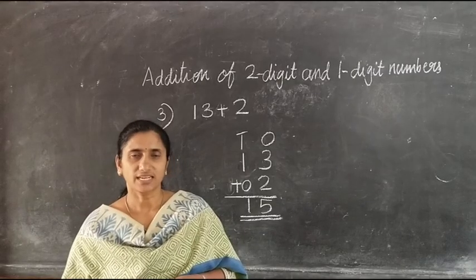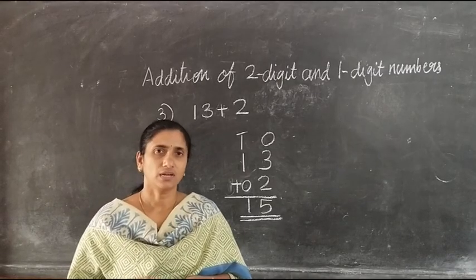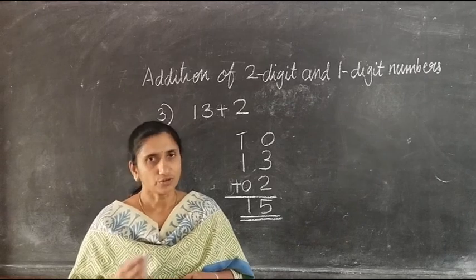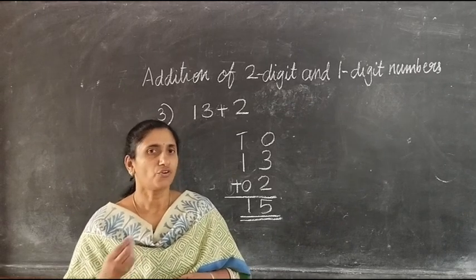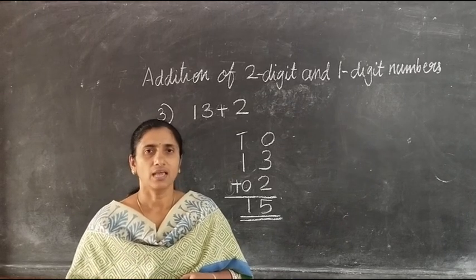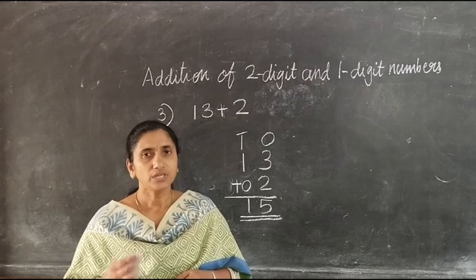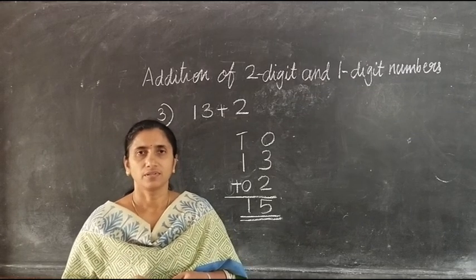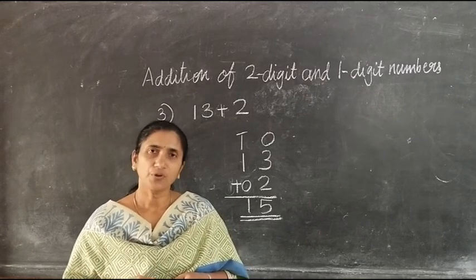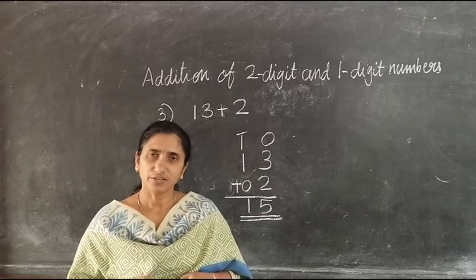So children, today we learned about addition on the number line, addition by forward counting, and addition of 2 digit and 1 digit numbers. I hope you understood today's class. Thank you, children.